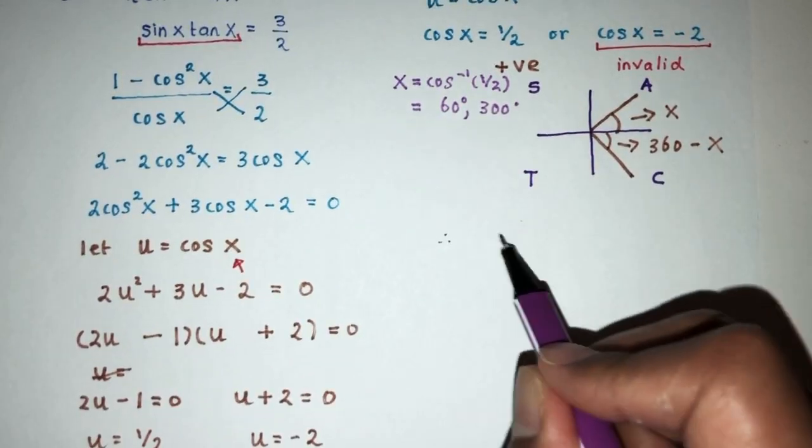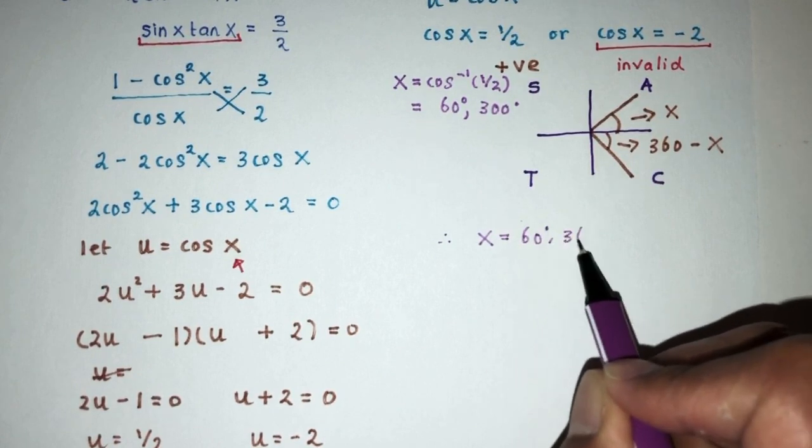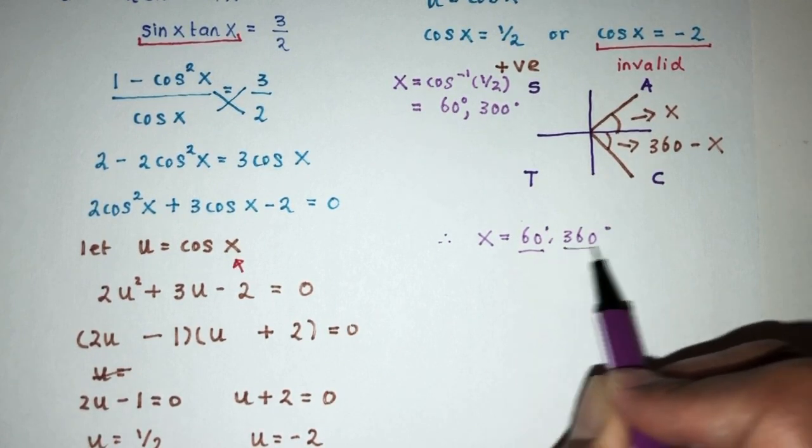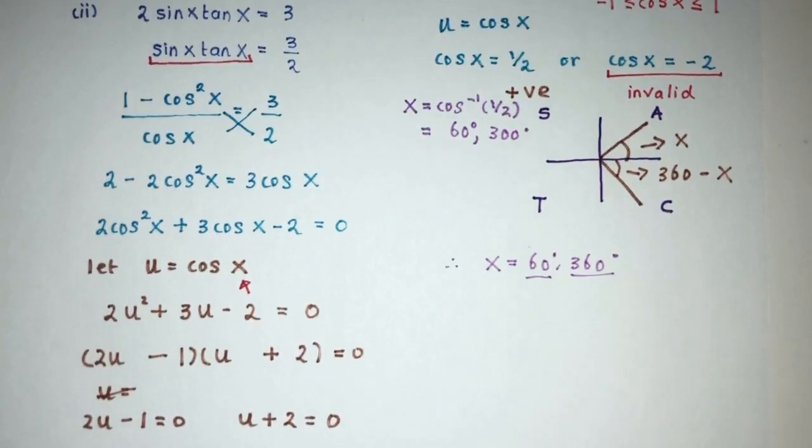So here for part one, we realize part two, x is equal to 60 and also 300 as your answer. Okay, this is part two of the question for a trigonometry question.